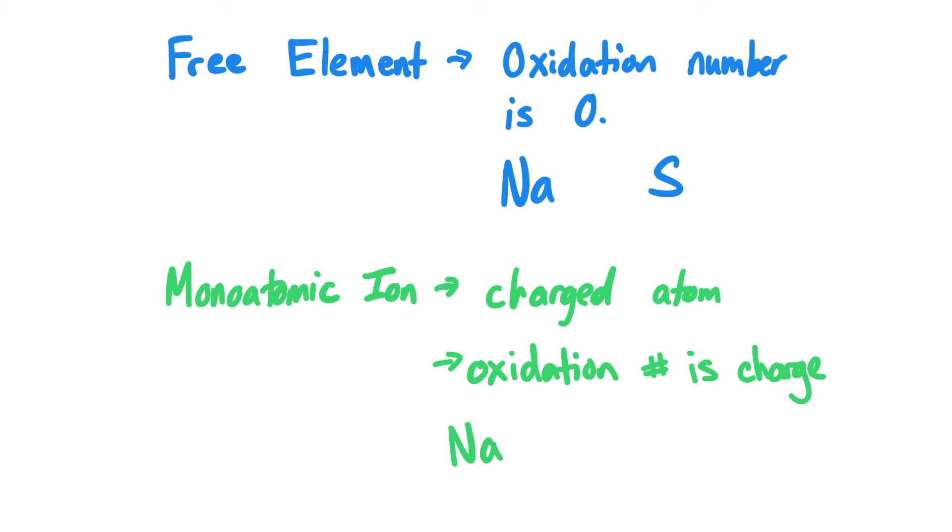Sodium is a monoatomic ion. It has a plus one charge. Sulfur is also a monoatomic ion. It has a two minus charge.